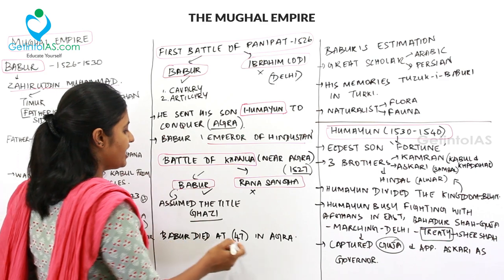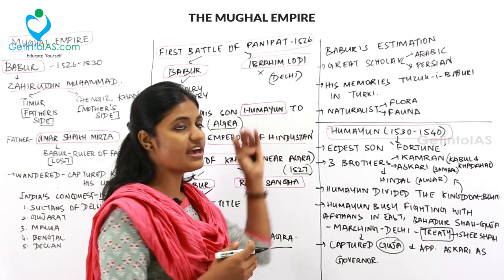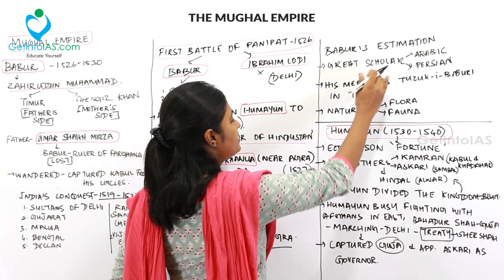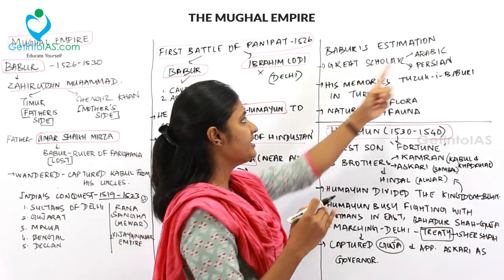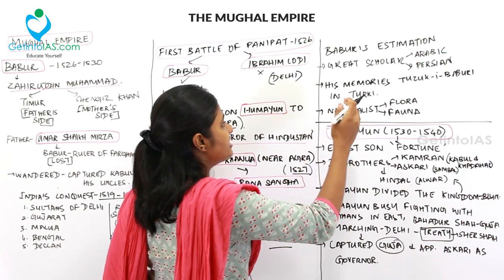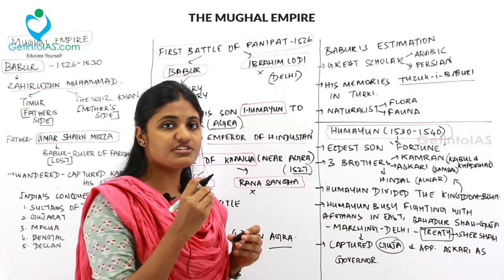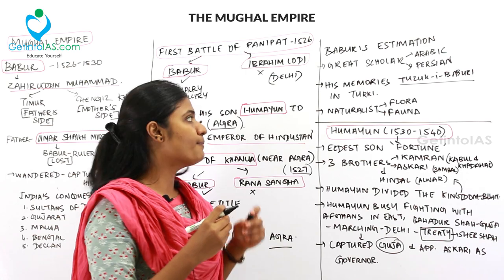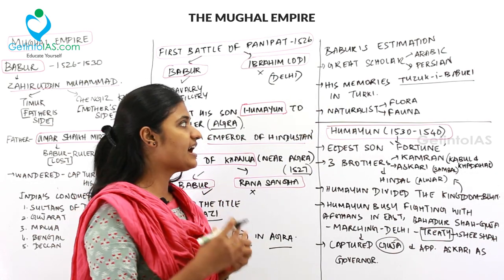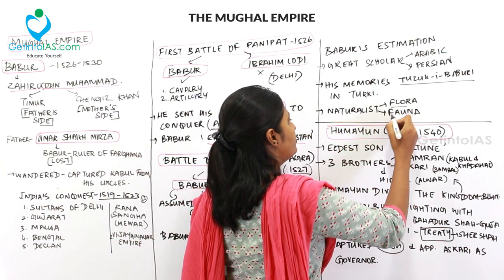Babur died at the age of 47 in Agra. He was a great scholar in Arabic and Persian. His memoirs, the Tuzuk-i-Babri, is his autobiography written in his mother tongue, Turki. He was also a great naturalist with detailed accounts of Indian flora and fauna.